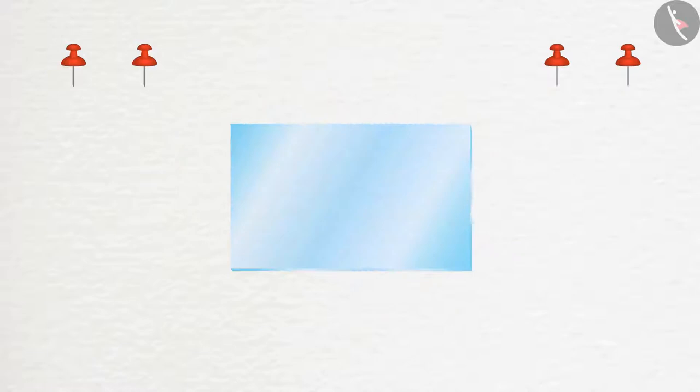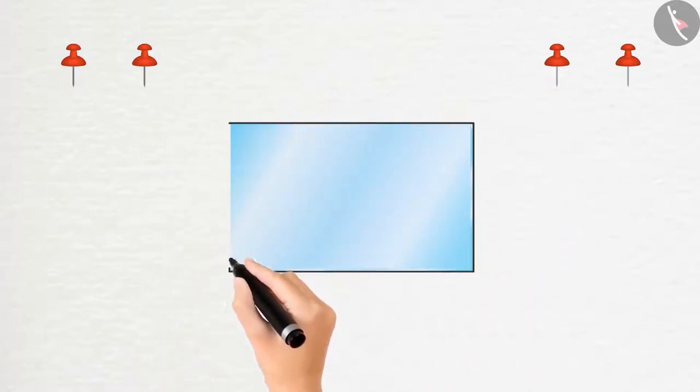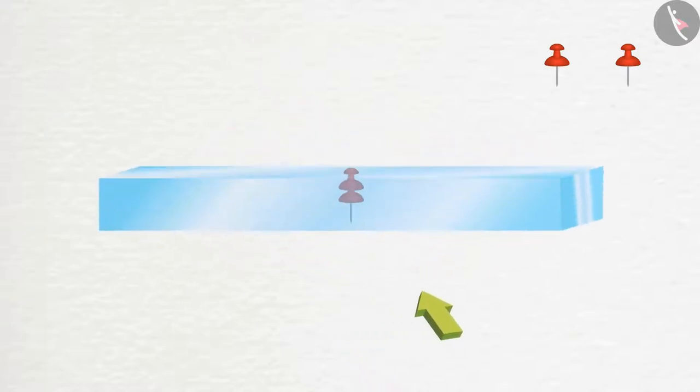After placing the slab on paper, we make an outline which will help us further. Fix two oil pins vertically such that the line joining the pins is inclined to the edge. Try to see the images of both these pins from the other side. Fix the other two pins such that these two pins and the images of the first two lie on the same line.